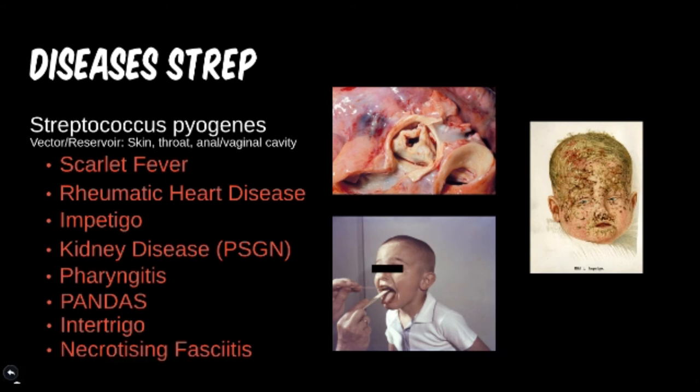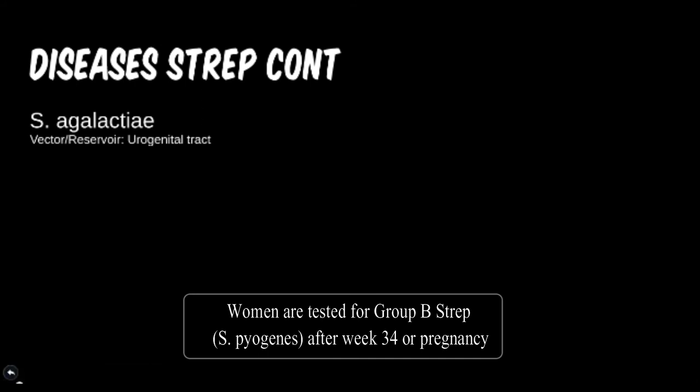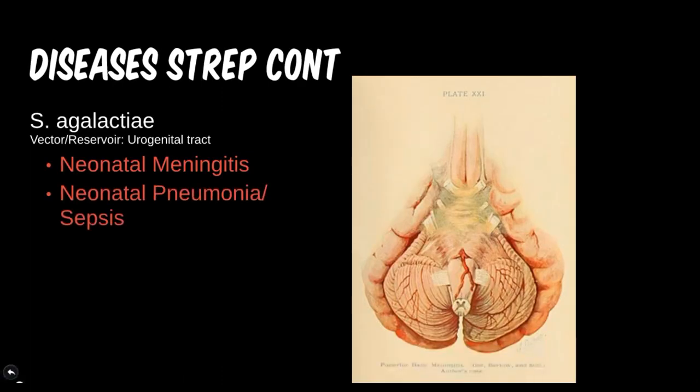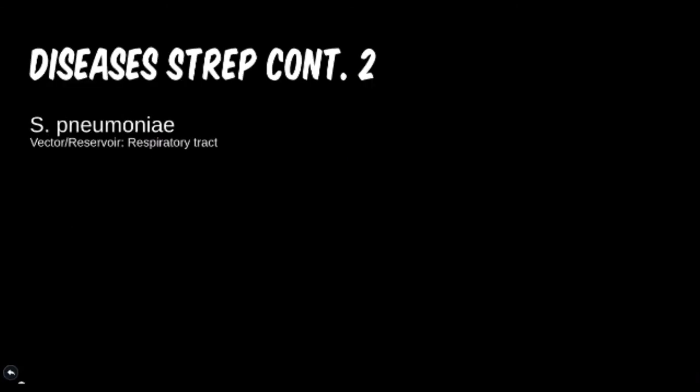Moving on to Streptococcus agalactiae — this is another one found in the urogenital tract, however it is generally asymptomatic in carriers. Babies, on the other hand, don't have protection yet as their immune systems aren't fully developed. This is why strep agalactiae is a main pathological concern in OB-GYN specialties, and why all pregnant women should be tested for colonization in their third trimester. Severe neonatal infection leads to meningitis, pneumonia, and sepsis. Testing and treatment of pregnant women is a quick and easy preventative measure.